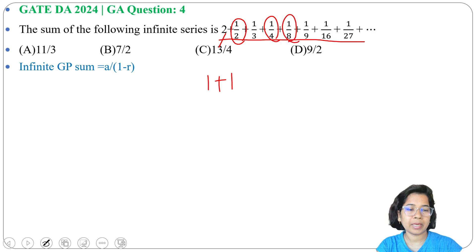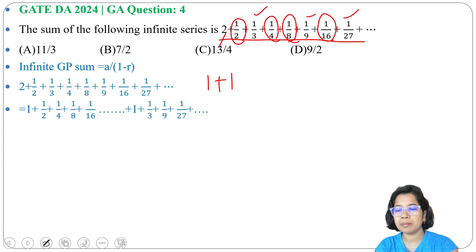Then 1 by 3, 1 by 9, 1 by 27 will be in another GP. So this sequence we can divide into 1 plus 1 by 2 plus 1 by 4 plus 1 by 8 plus 1 by 16 till infinite, plus 1 plus 1 by 3 plus 1 by 9 plus 1 by 27 till infinite.